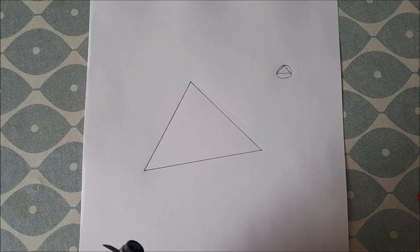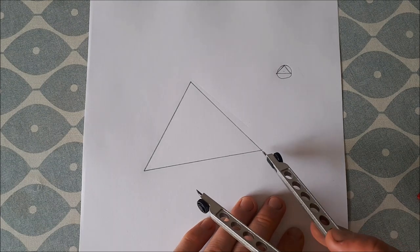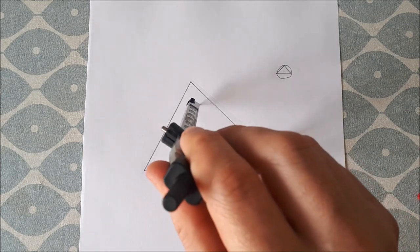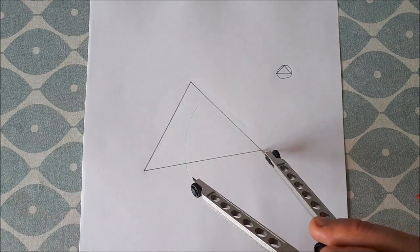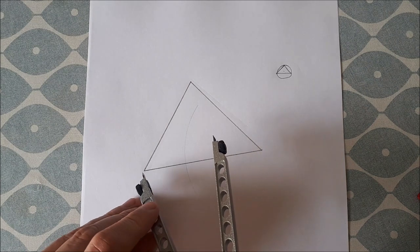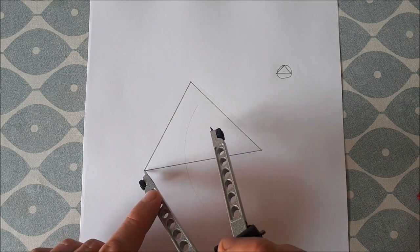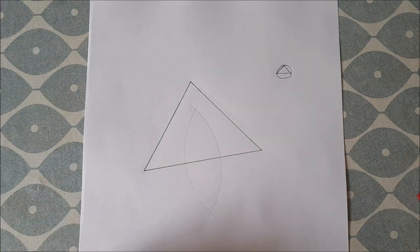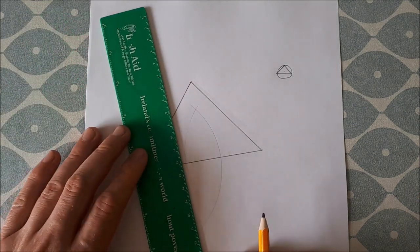To bisect a line, put the tip of your compass at one of the vertices and draw an arc. Make sure the arc is over half the length of the line segment. Keep the same size on your compass, bring the tip to the other vertex, and draw another arc. Then join up these two points.